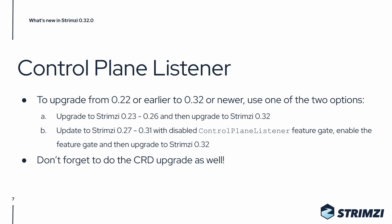Or you can upgrade to Strimzi 0.27, 0.28, 0.29, 0.30, or 0.31 with the disabled control plane listener feature gate. Once the upgrade is complete, you can enable the feature gate and then upgrade to Strimzi 0.32. Don't forget that when upgrading from Strimzi 0.22 or earlier, you also need to do the CRD upgrade as well. All of this is of course also covered in our documentation.